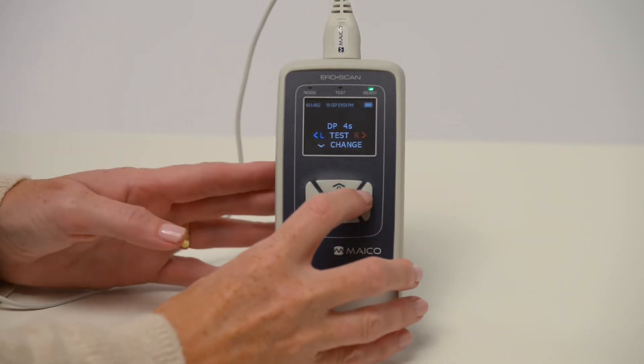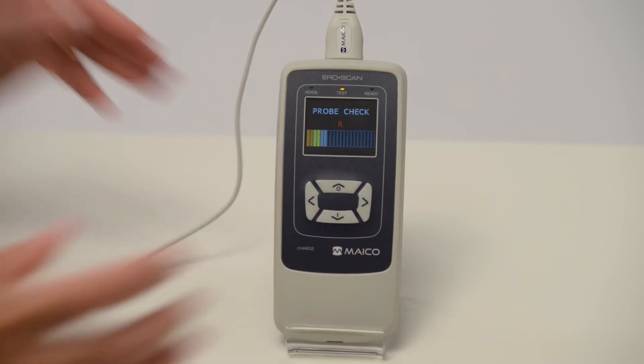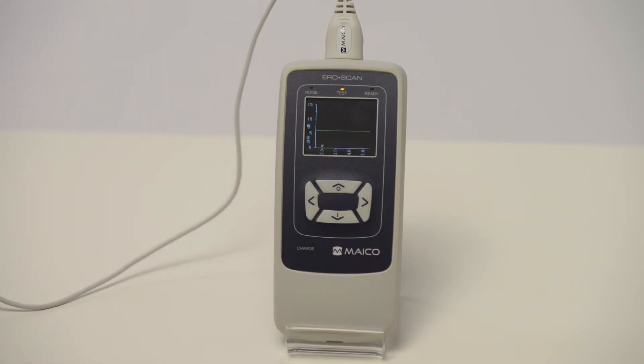Select ear by pressing left arrow for the left ear and right arrow for the right ear. The probe check will start automatically followed by the OAE test. In the event the test does not progress, try repositioning the probe or changing ear tip size.